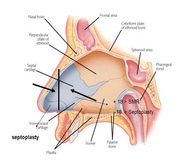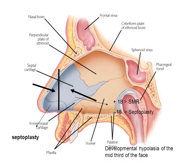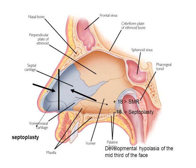If the posterior half is resected less than 18 years of age, since it contains a growth center that contributes to growth, it leads to developmental hypoplasia of the mid third of the face. Herein we have reviewed in detail the structural and functional anatomy of the nasal septum.